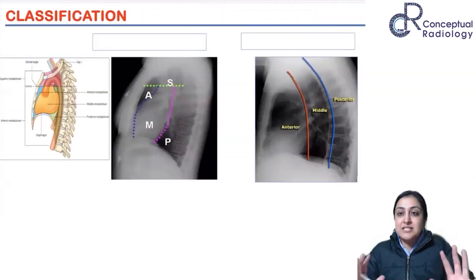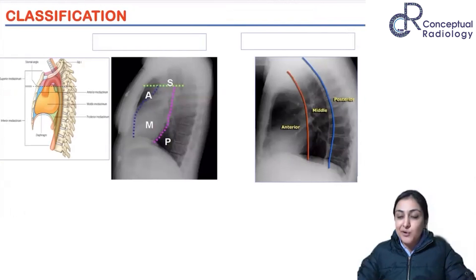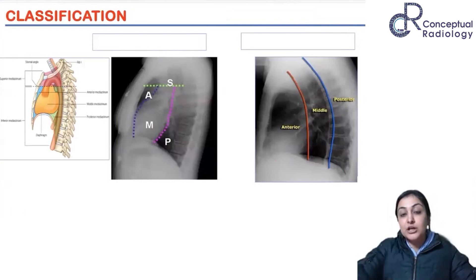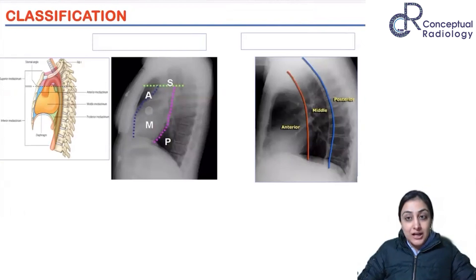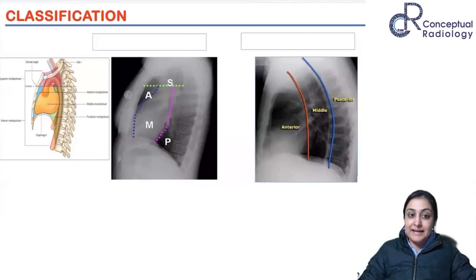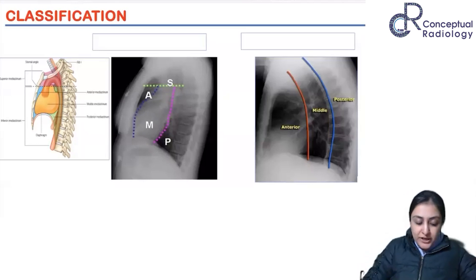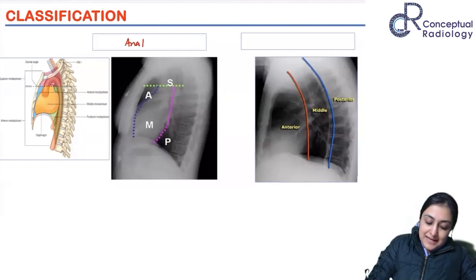Starting with mediastinal classification — there are various classifications, and you need to be aware of at least three. The first two older ones are described on the chest X-ray. In the anatomical classification, lines are drawn in front of the heart: anything anterior to the heart is the anterior mediastinum, the heart itself is the middle mediastinum, and posterior to the heart border is the posterior mediastinum.